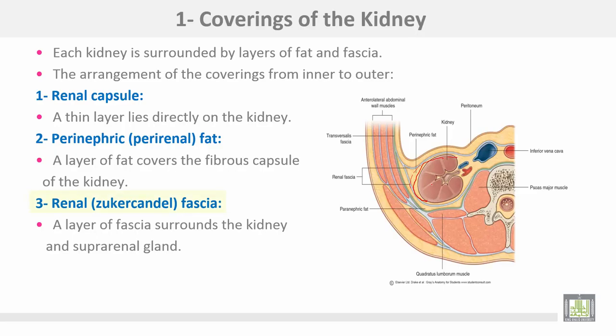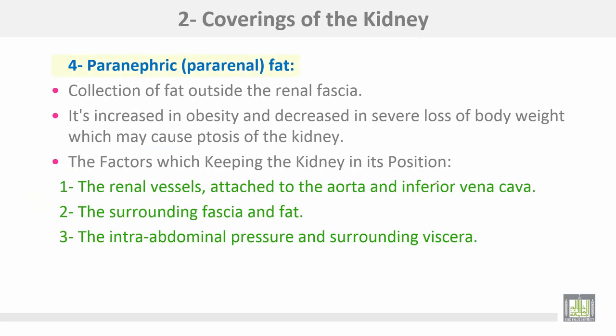Number three is the renal fascia, or Gerota's fascia — a layer of fascia that surrounds the kidney and suprarenal gland. Number four is the paranephric fat, or pararenal fat — a collection of fat outside the renal fascia. It is increased in obesity and decreased in severe loss of body weight, which may cause ptosis of the kidney.